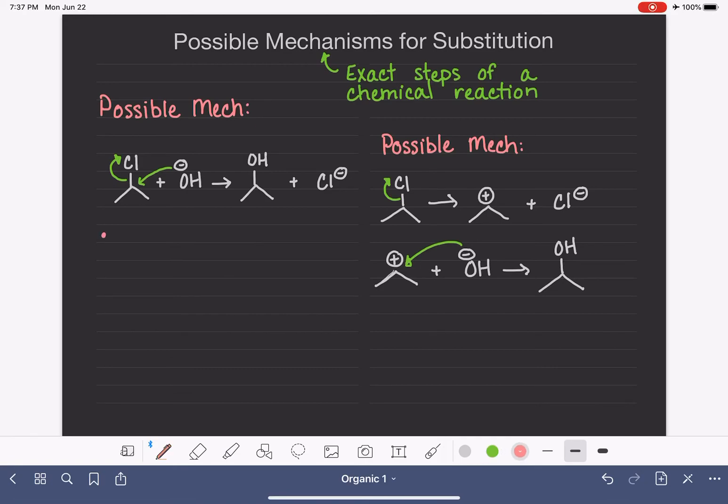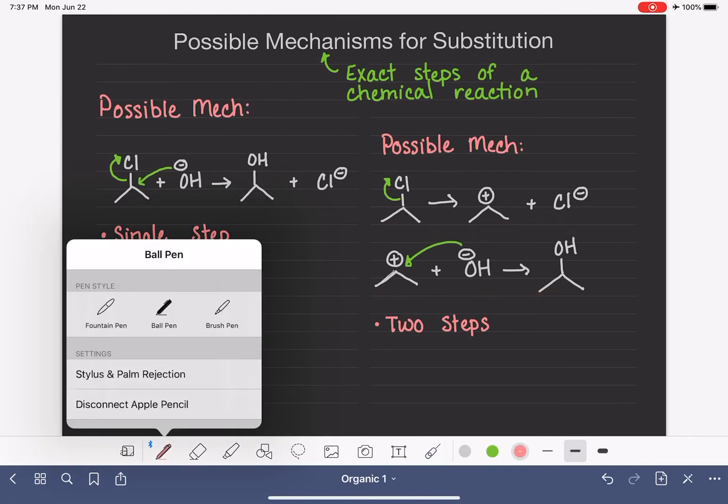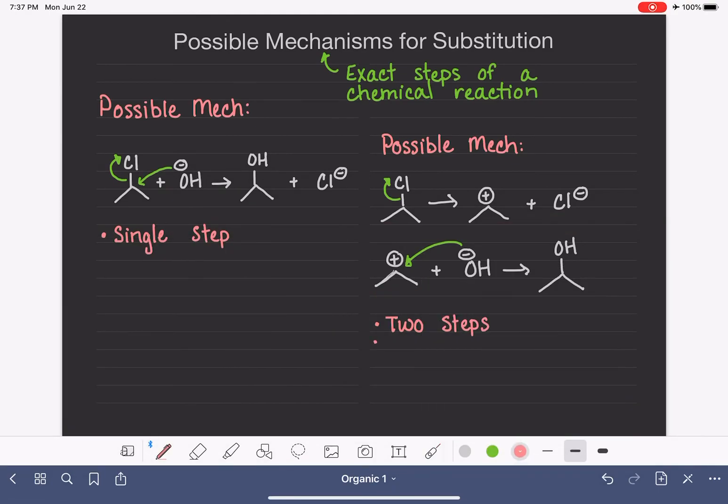So in the first possible mechanism that we drew, everything is happening at once in one single step. It's a one-step reaction, whereas in the second possible mechanism, this is two steps. And because this is a two-step reaction, we actually have an intermediate that's formed.